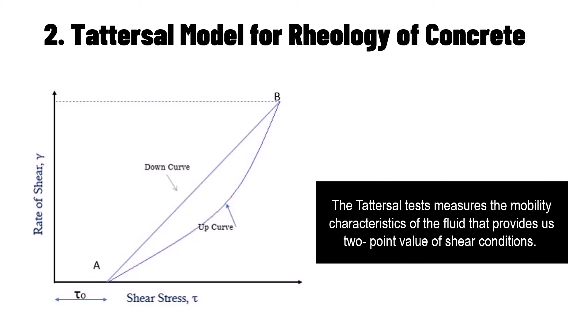In this figure, we have shear stress and rate of shear value. In this method, the power required to run the concrete mixer at different speeds are calculated. After this, the torque T is calculated by dividing the power by speed.